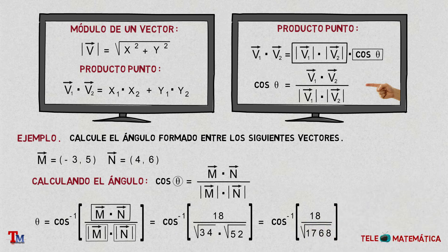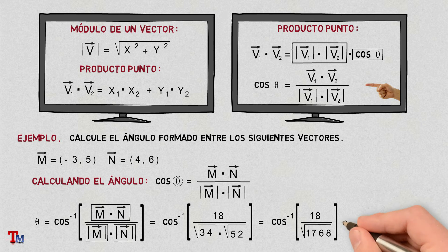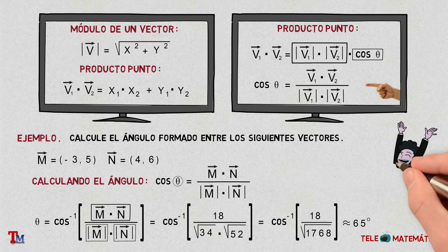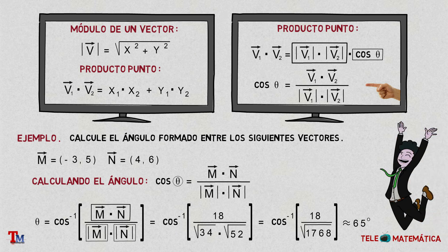Introducing these values in a calculator, we get that the angle formed between vector M and vector N is approximately 65 degrees. I hope you have understood the subject. And here ends our video about the calculation of the angle between two vectors.